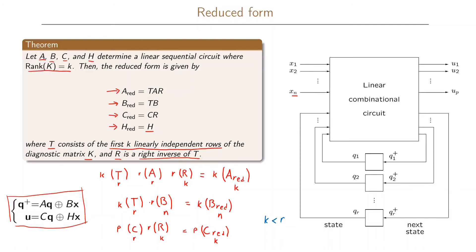The reason we have fewer state variables in the reduced form is that k is less than R, so the size of the reduced matrices is smaller than in the original matrices.